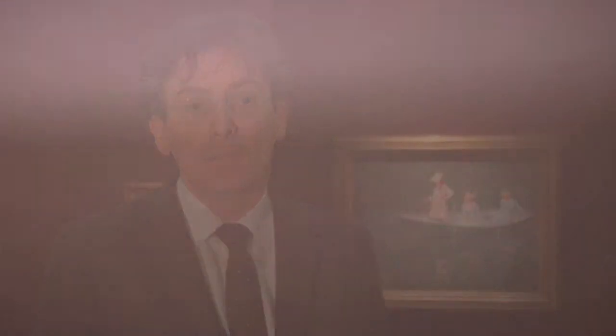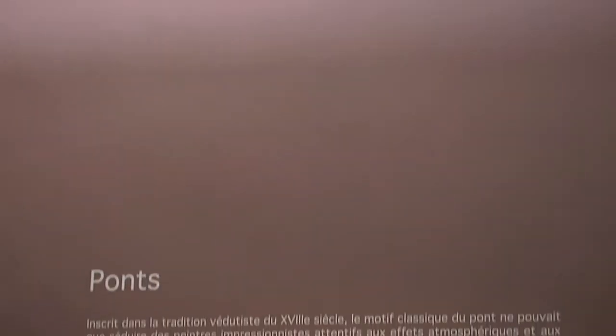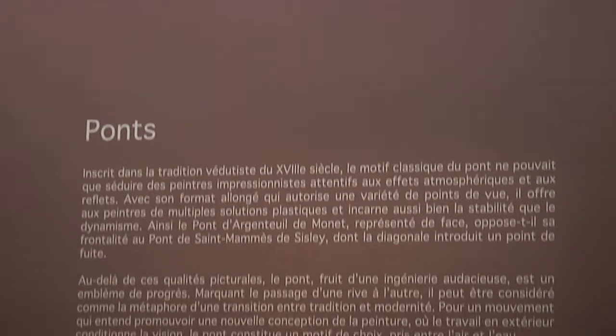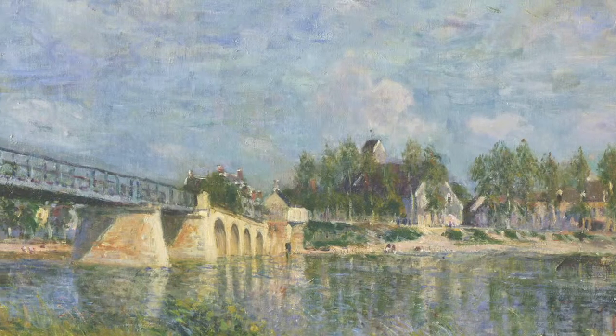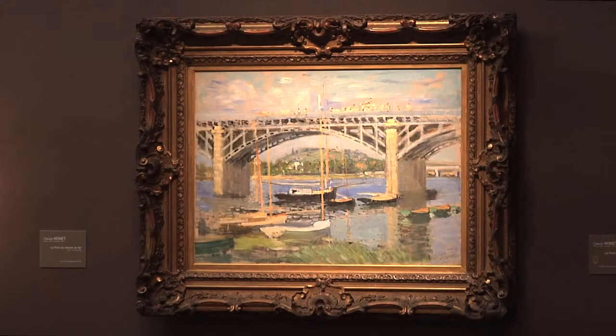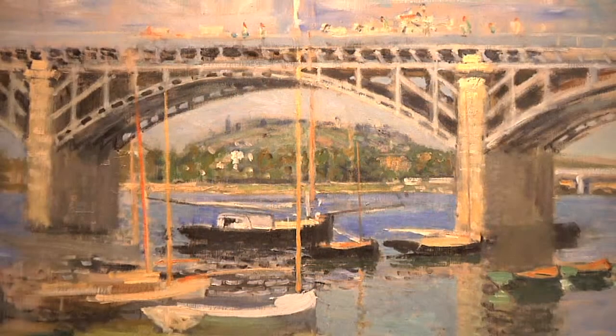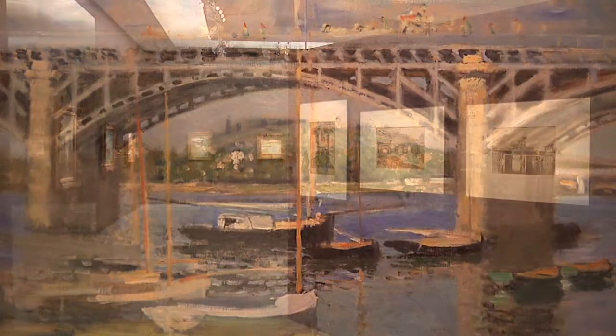Un exemple : une salle consacrée aux ponts. Les ponts, c'est un thème magnifique pour un peintre qui s'intéresse à la lumière et au reflet, bien entendu. Mais c'est aussi, en 1873, quand Monet peint à Argenteuil, le symbole de la France qui se reconstruit après la guerre de 1870 et le signe de la révolution industrielle en marche.